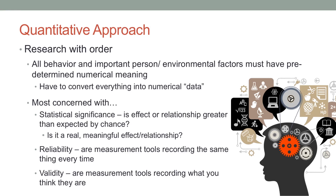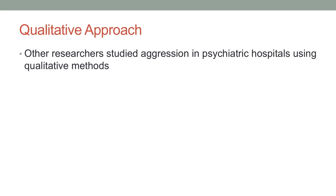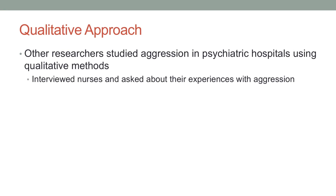All these things require you to quantify your variables so that you can run statistics on them to see if they're significant, reliable, or valid. Now let's compare that to a qualitative approach. Researchers have also looked at aggression in psychiatric hospitals using more qualitative methods such as interviews. In one such study, they simply asked nurses about their experiences with aggression on the job.